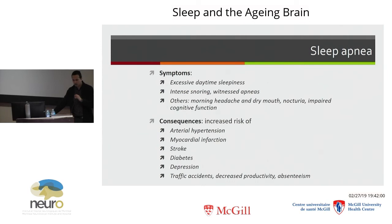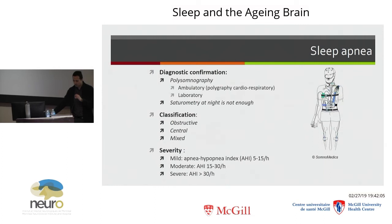Sleep apnea is confirmed in the lab by recording your breathing and sleep. There are different types: obstructive sleep apnea, the most common, where there's an obstruction of your upper airway, and central apnea, where your central command of breathing is affected. You may hear the term apnea-hypopnea index, or AHI, which refers to the number of apneas or hypopneas per hour. It is generally considered severe at 30 per hour.